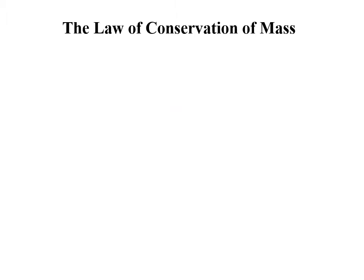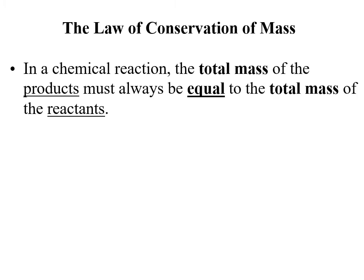The law of conservation of mass dictates what we end up with at the end of the reaction. We are not creating or destroying matter. In a chemical reaction, you're just taking what you already had and rearranging it into a new arrangement. The total mass of the reactants and the total mass of the products have to be equal to each other. This is what we're going to use to do our balancing of chemical reactions.